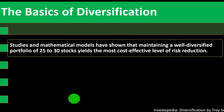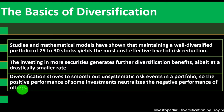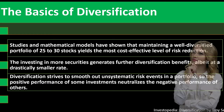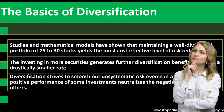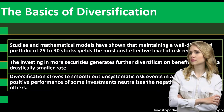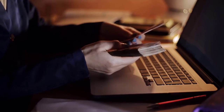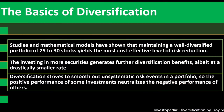Studies and mathematical models have shown that maintaining a well-diversified portfolio of 25 to 30 stocks yields the most cost-effective level of risk reduction. Investing in more securities generates further diversification benefits, albeit at a drastically smaller rate. When you get into the idea of diversification, you can think about what will give you the big benefits, and then tweak from that point forward for further gains — though those gains will not be as large.